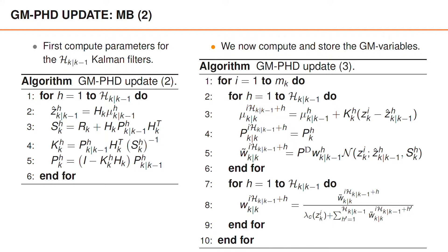For instance, if h and i are both 1, we use the index H k given k minus 1 plus 1. This makes sense, since we already used the first indices to store the parameters corresponding to the Poisson point process part of the posterior.